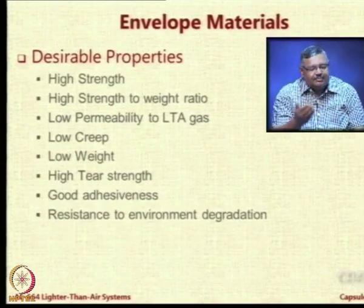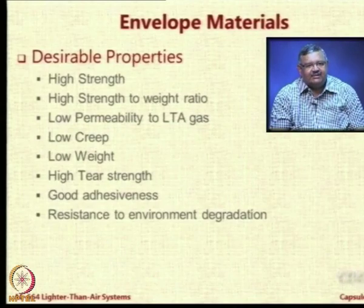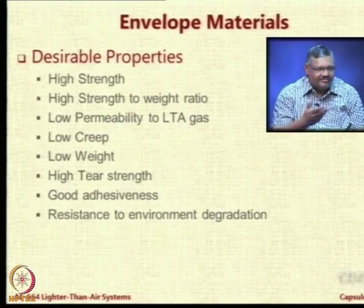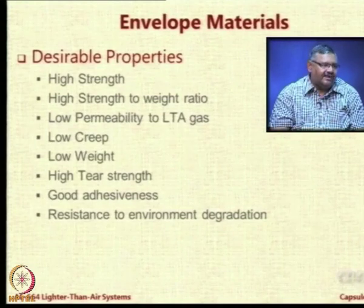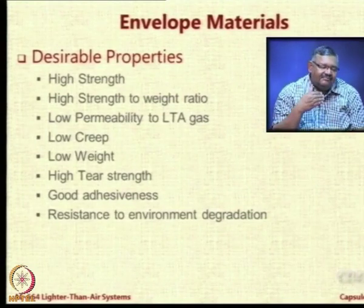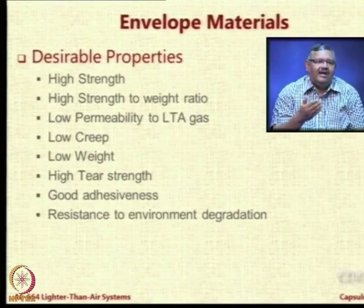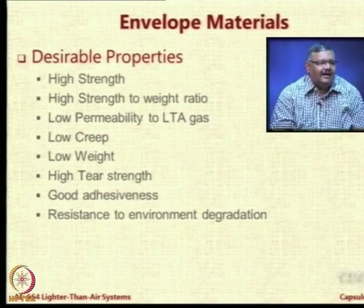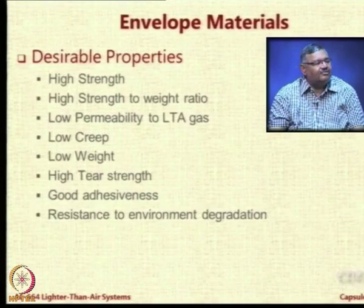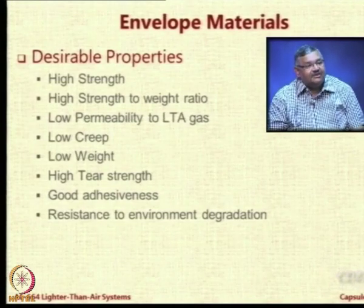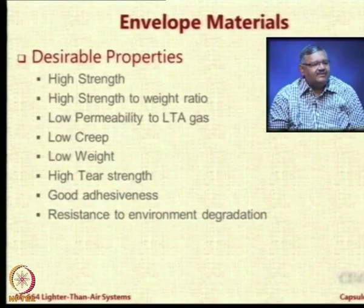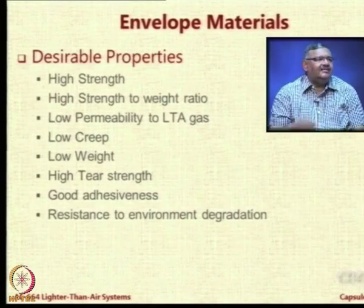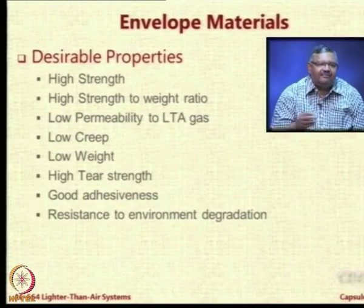When an LTA system is exposed for a long time in the atmosphere, ultraviolet radiation from the sun will cause the fabric to break down over time. Therefore, either a coating must be provided on top of the envelope for UV resistivity, or the fabric itself should inherently resist UV degradation. Environmental degradation can also come from water or snow. Many materials meet other requirements but fail at this one, and others are excellent in other properties but fail in adhesiveness.